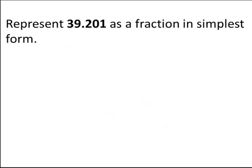Represent 39.201 as a fraction in simplest form. Here we have a whole number part of 39, which we need to add together with the decimal part 201 thousandths. We can make 201 thousandths into a fraction simply by putting 201 over 1000.